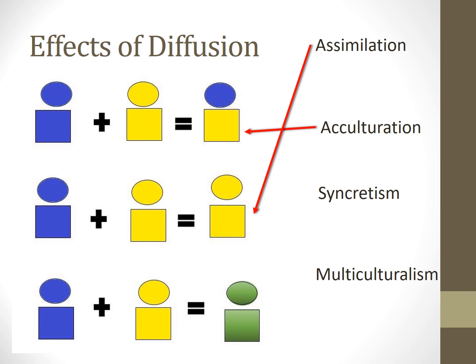Next up, syncretism: the bottom interaction shows that the blue culture and the green culture interact and form an entirely new culture — the green culture. But we still have multiculturalism. Remember our salad bowl example? Acculturation and multiculturalism have a lot in common, particularly that we can still see culture traits from a variety of different cultures, just like we would in the salad bowl. Which of these effects would most closely align to the melting pot example? Probably assimilation — as people melt into society, they lose the culture traits they previously had.